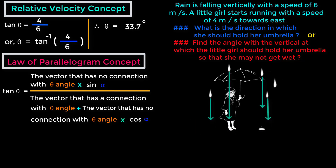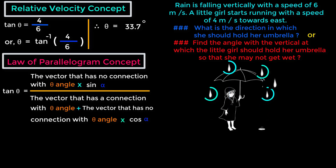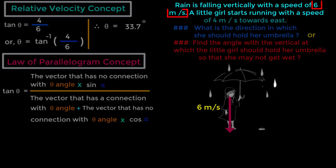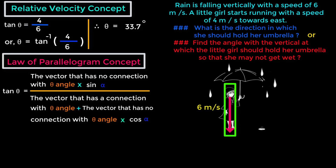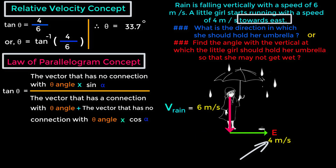Look at this picture. Rain is falling vertically with a speed of 6 meters per second — that means raindrops are falling vertically downwards at 6 meters per second. This is a vector, as it has both magnitude and direction. We can call this vector V_rain. The girl starts running towards the east direction with a speed of 4 meters per second.